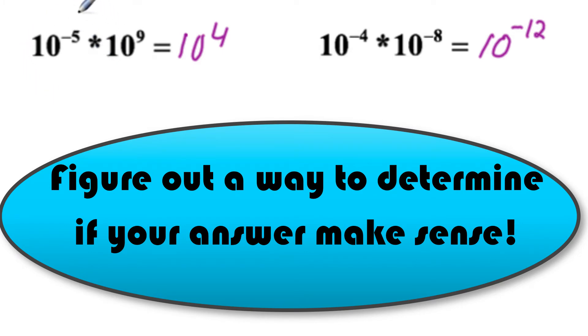So if we multiply with a number less than one, then our result should be less than the number we're multiplying against. So 10 to the minus fifth is less than one and therefore 10 to the fourth should be less than 10 to the ninth. Similarly here, 10 to the minus fourth is less than one and therefore 10 to the minus twelve should be less than 10 to the minus eight.